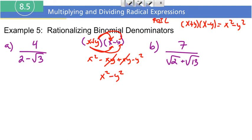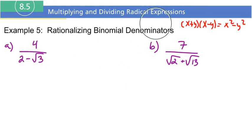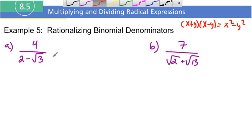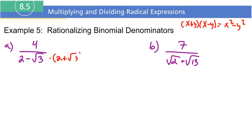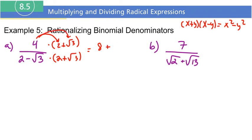You learned in your factoring section that this is called the difference of two squares — so that should look a little familiar. Now let's use this. I want to get rid of the radical, and the way we do that is by multiplying by the conjugate. So I'm going to multiply the bottom by two plus radical 3, and multiply the top by two plus radical 3. We're not changing the problem because multiplying the top and bottom by the same number is just multiplying by one.